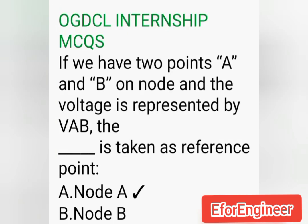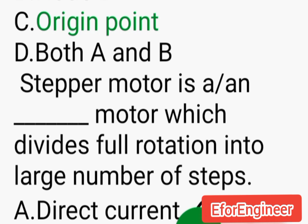OGDCL Internship MCQs. If we have two points A and B on a node and the voltage is represented by VAB, the ___ is taken as reference point: A. Node A, B. Node B, C. Origin point, D. Both A and B.